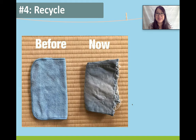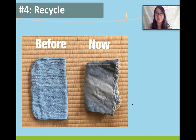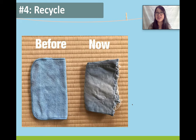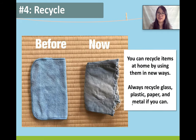Number four: recycle. We can take our plastic, cans, and glass and give it to the municipal recycling company. But we can also recycle at home. In this picture, before, this person used to buy a new towel to clean their house. Now instead of buying new, they are going to recycle something and use it in a new way. They decided they couldn't repair their jeans — they were too damaged — so instead they cut the material and recycled it, using it as a cloth to clean the house. We can recycle at home by using old items in new ways, and of course we should always recycle plastic, paper, glass, cans, and any other kind of metal.